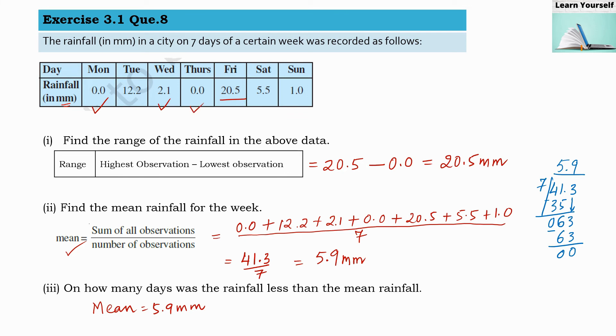Saturday, yes it was less. And Sunday also it was less. So total five observations we got where the rainfall was lesser than the mean rainfall. So out of seven days, five days rainfall was less than mean rainfall.